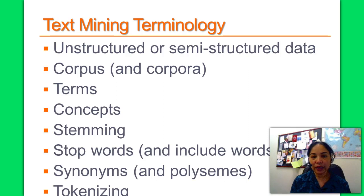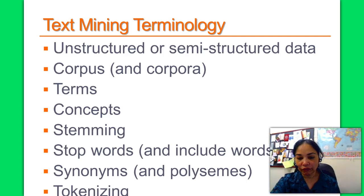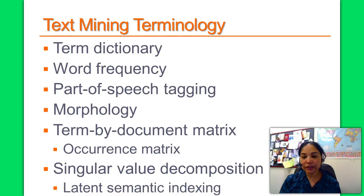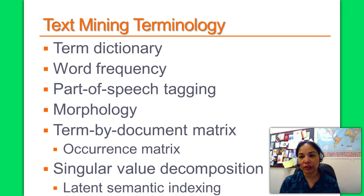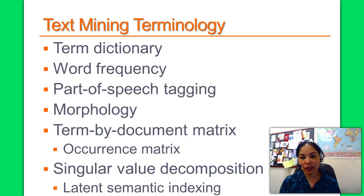A token is a block of text in a sentence, and the assignment of meaning to blocks of text is called tokenizing. A term dictionary is a collection of terms specified to a narrow field. Word frequency is the number of times a word is found in a document. Part of speech tagging is the marking of words in a text as nouns, verbs, adjectives, etc. Morphology studies the internal structure of words. A term by document matrix describes relationships between terms and documents, and singular value decomposition (SVD) is a method to reduce the term by document matrix to a manageable size.